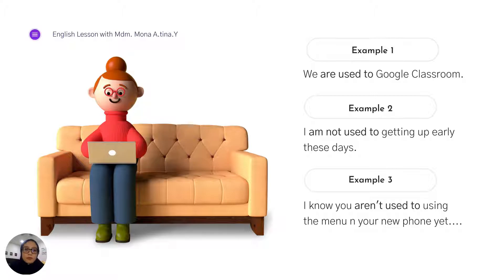Example one for the present form: We are used to Google Classroom. We is plural, so we use the plural verb are. And then for the negative one: I am not used to - we simply put the word not in between the BE verb and the structure used to. I am not used to getting up early these days. And the third example from your textbook: I know you are not used to using the menu on your platform yet.